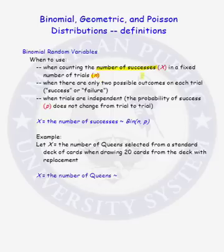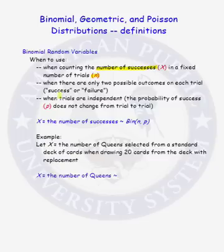So my success is whether I roll a three or a six. If I roll a one, two, four, or five, I'm going to consider that a failure. That's not what I'm interested in. So when there are only two possible outcomes on each trial, we call them success or failure. Success does not necessarily have to be a positive outcome; it is just the outcome that you are counting, and we just call that success for convenience purposes.